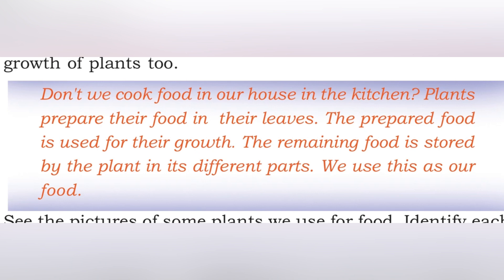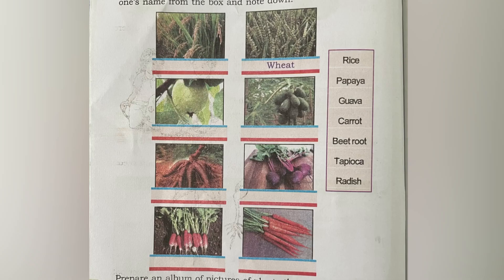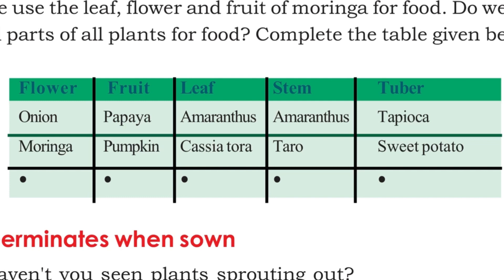So, plants store the remaining food in their different parts. Look at these pictures. Can you write the names under the pictures? Rice, wheat, guava, papaya, tapioca, beetroot, radish, and carrot. All of you complete this in your textbook. Then next page, page number 15. Look at the picture.